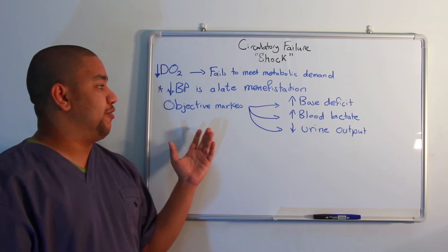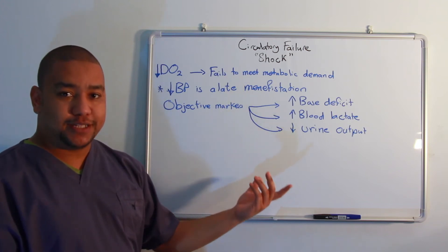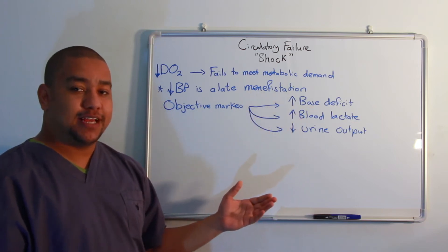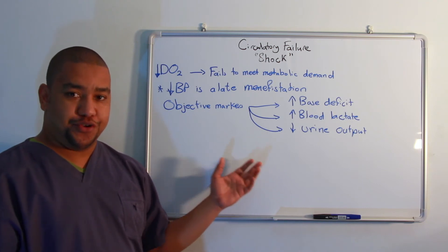So how can you say in an objective manner that shock might be happening in the patient? You might find an increase in base deficit, an increase in blood lactate, or a decrease in urine output.